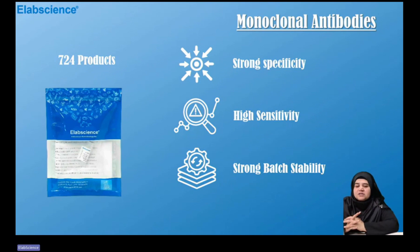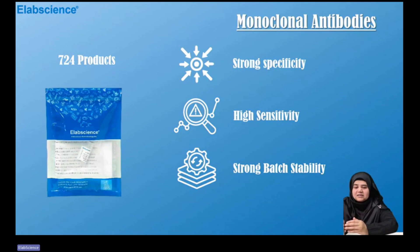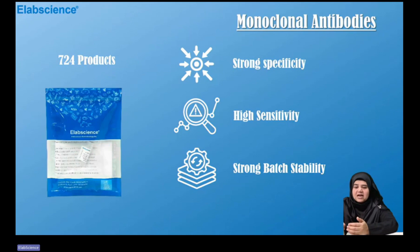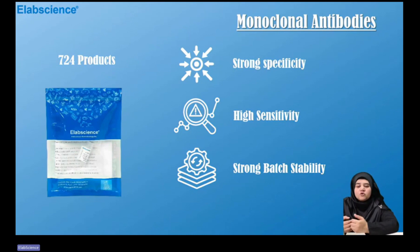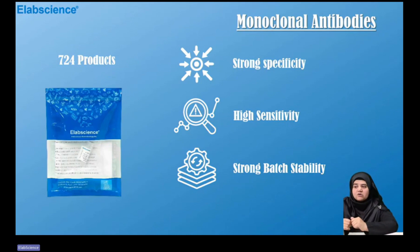For monoclonal antibodies, these are highly homogeneous antibodies produced by a single B-cell clone, targeting only a specific antigenic epitope. Compared to polyclonal antibodies, they have advantages of lower nonspecific cross-reactivity, high specificity, and little batch-to-batch variability. E-Lab Science monoclonal antibodies from mouse sources are secreted by hybridoma cells — formed by fusing immune cells with myeloma cells — and they have characteristics of high potency and stable quality. We have about 724 monoclonal antibody products.